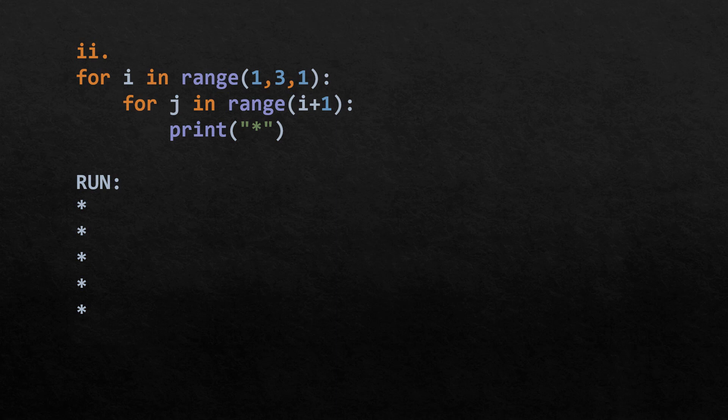For i in range(1, 3) with step 1, i takes values 1 and 2. For each i, j ranges over range(i + 1). When i=1, j is 0 and 1 (2 iterations). When i=2, j is 0, 1, and 2 (3 iterations). Total executions: 2 + 3 = 5. So star is printed 5 times.